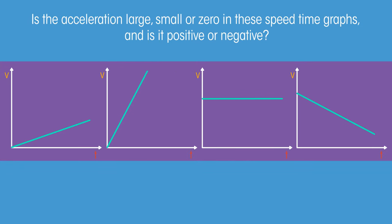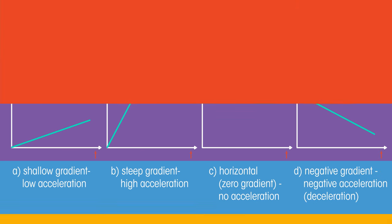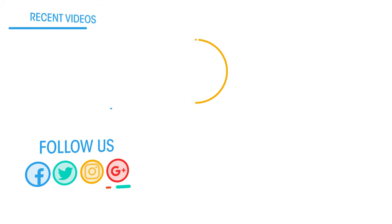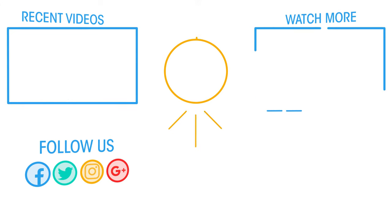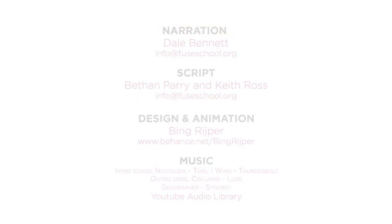Is the acceleration large, small, or zero in these time graphs — and is it positive or negative? Pause the video while you think. So that's how speed and acceleration are related and can be calculated. If you like the video, give it a thumbs up and don't forget to subscribe. Comment below if you have any questions, and why not check out our Fusco app as well — until next time!